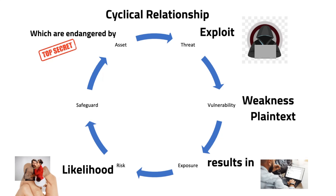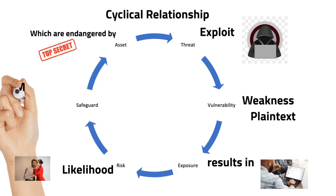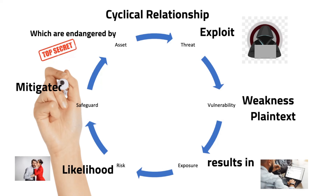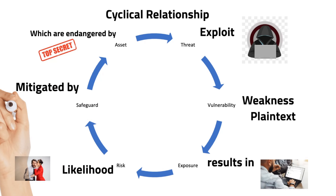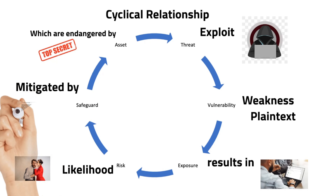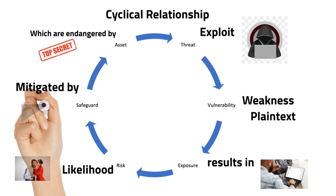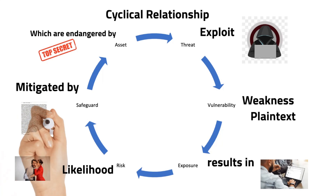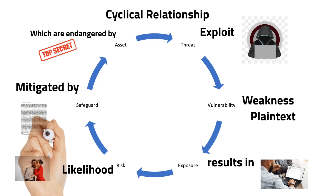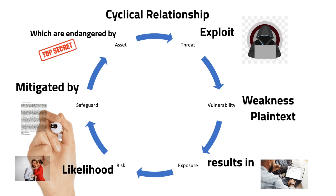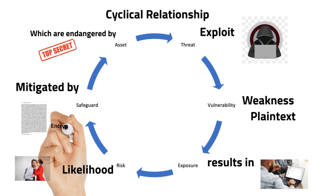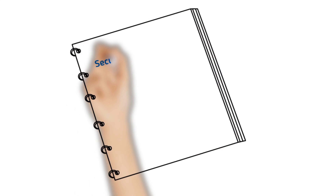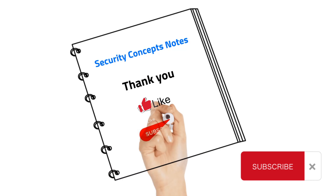How are we going to mitigate it? That is where safeguard comes in. A safeguard is nothing but a security control, protection mechanism, or countermeasure — anything that removes or reduces a vulnerability or protects against one or more specific threats. In our example, it can be mitigated by using an encryption mechanism. When we encrypt the top secret data, it can be protected from unauthorized users.